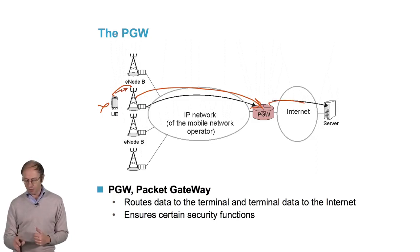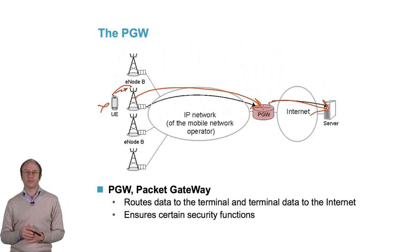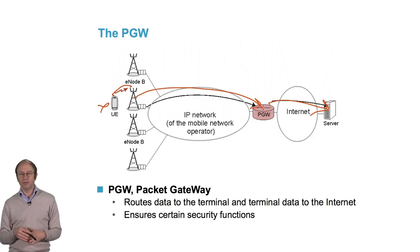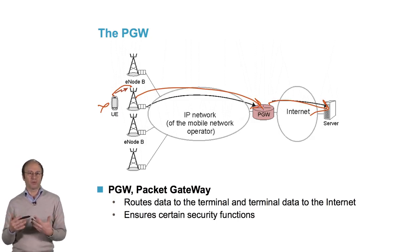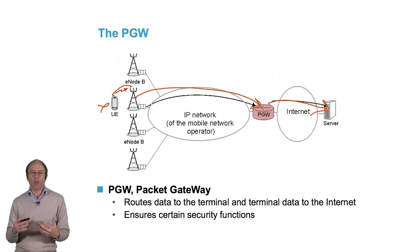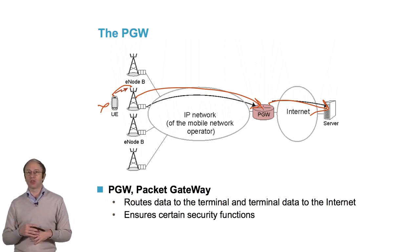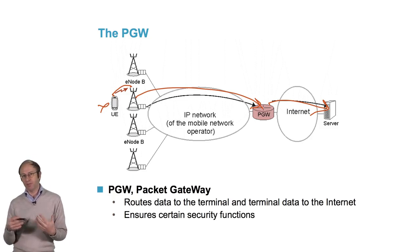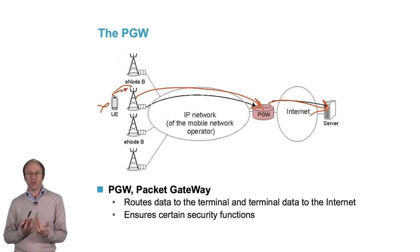If we have a network with a large number of subscribers, like in China, there can be several P-Gateways, because one P-Gateway does not have enough capacity to manage all packets. Several P-Gateways can also be necessary to have redundancy and ensure reliability.